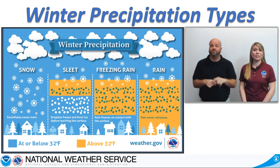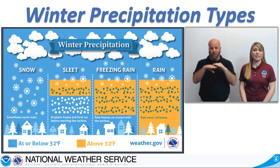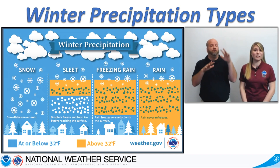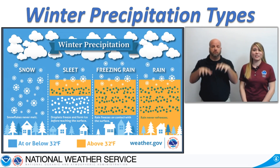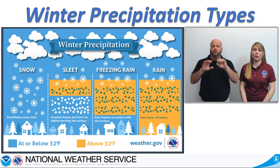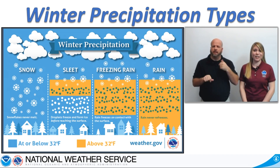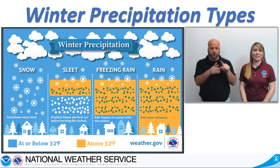However, if there is air just above freezing aloft, we could end up with either sleet or freezing rain. And depending on the type of weather system affecting your area, it is possible to have multiple types of precipitation from the start to the end of the event.